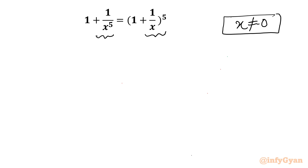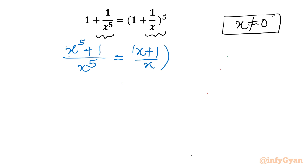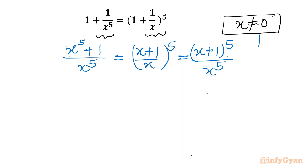Now I will take LCM from both sides. On the LHS, taking LCM gives x power 5 plus 1 over x power 5. On the RHS we have x plus 1 over x, whole power 5, which using exponent properties can be written as x plus 1 whole power 5 divided by x power 5. Since x is not 0, we can cancel the denominators, leaving x power 5 plus 1 equal to x plus 1 whole power 5.